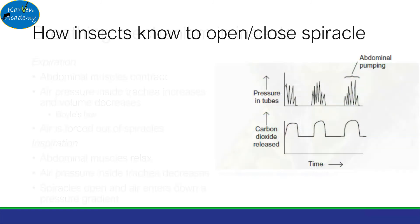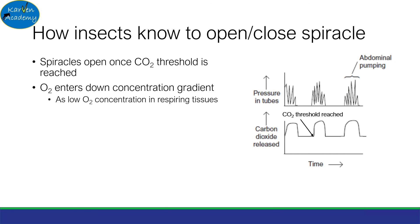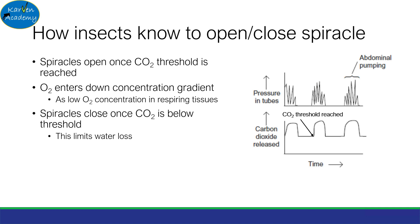But how do insects know when to open or close their spiracles? This is mediated by the carbon dioxide threshold. Spiracles open when the carbon dioxide threshold is reached, and therefore oxygen enters down a concentration gradient because there is low oxygen concentration in the respiring tissues. The spiracles close when the carbon dioxide concentration is below the threshold, which also limits water loss. Notice the increase in pressure of the tubes due to the abdominal pumping, which expels carbon dioxide.